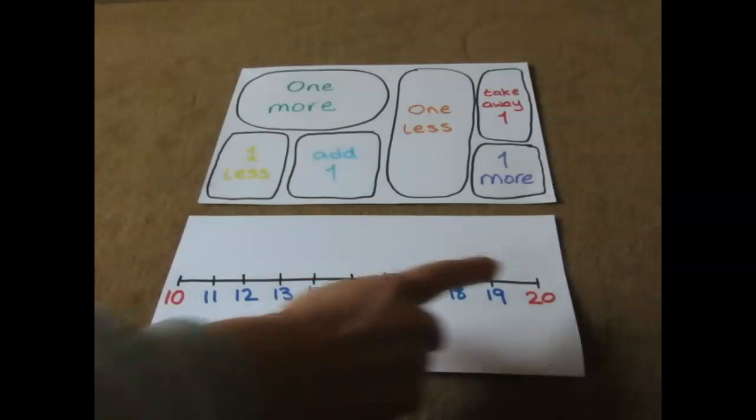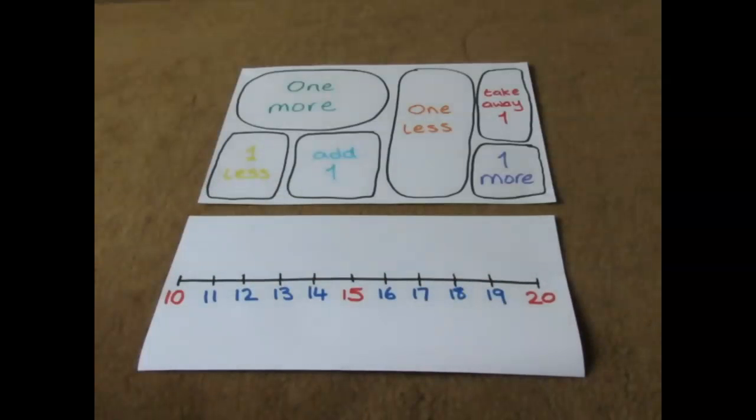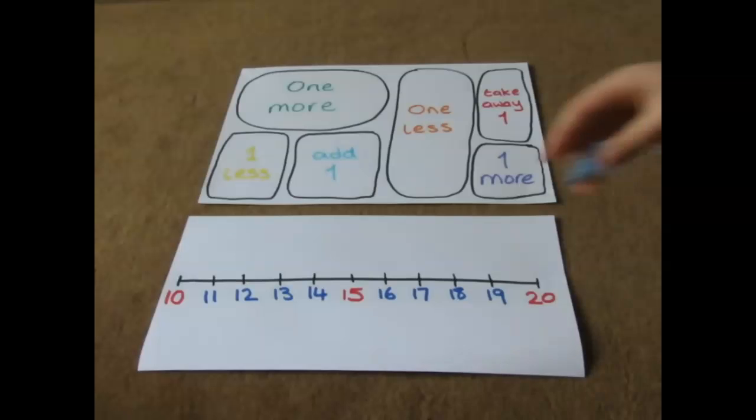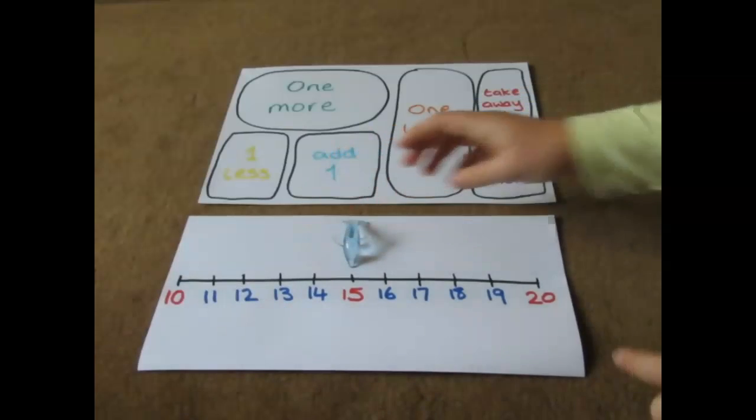You could do 0 to 10 if you wanted to. So the idea of the game is that you start in the middle of your number line and each player has a counter or something that they can move up and down their number line. We've chosen to use a Dolphin and a Seahorse. So can you put our Dolphin and our Seahorse on our number line so they're both pointing at 15?